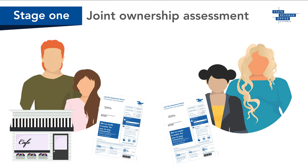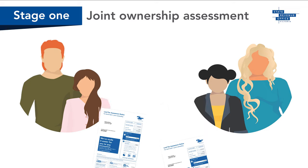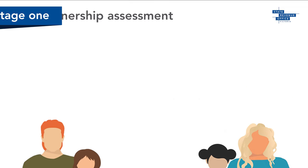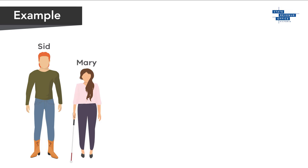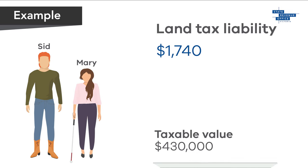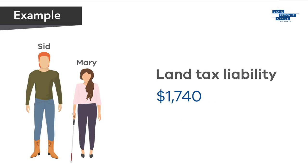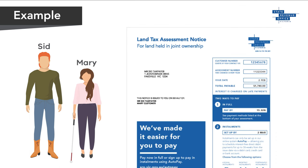All joint owners of the property are jointly liable for the land tax payable. If the joint ownership only owns exempt land, or if the land owned is below the land tax threshold, we will not issue a joint ownership assessment. For example, Sid and Mary jointly own land with a total taxable value of $430,000. Land tax on the jointly owned land is $1,740, so they will receive a joint ownership assessment for $1,740.